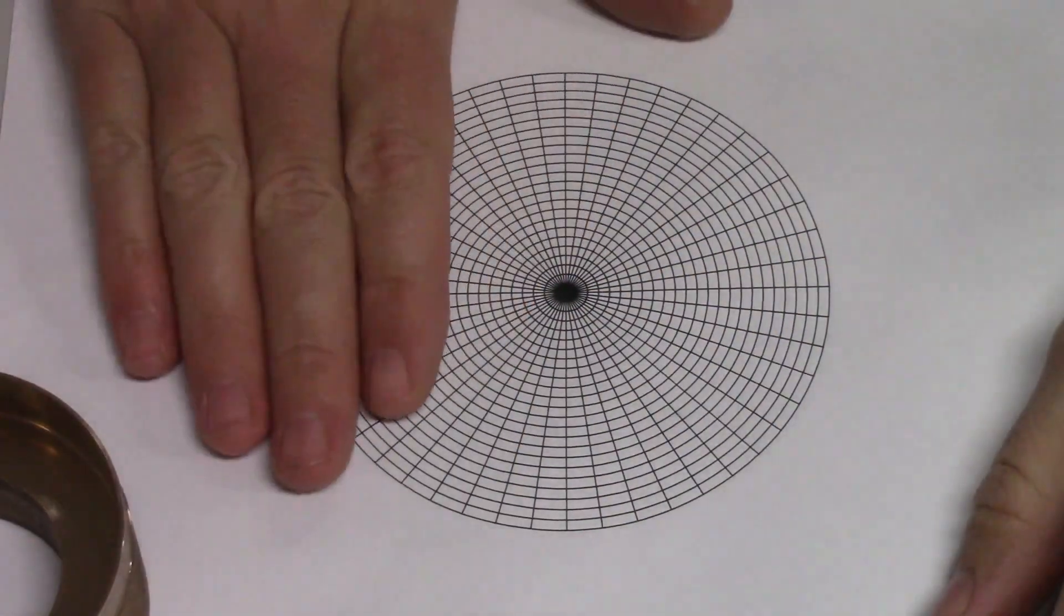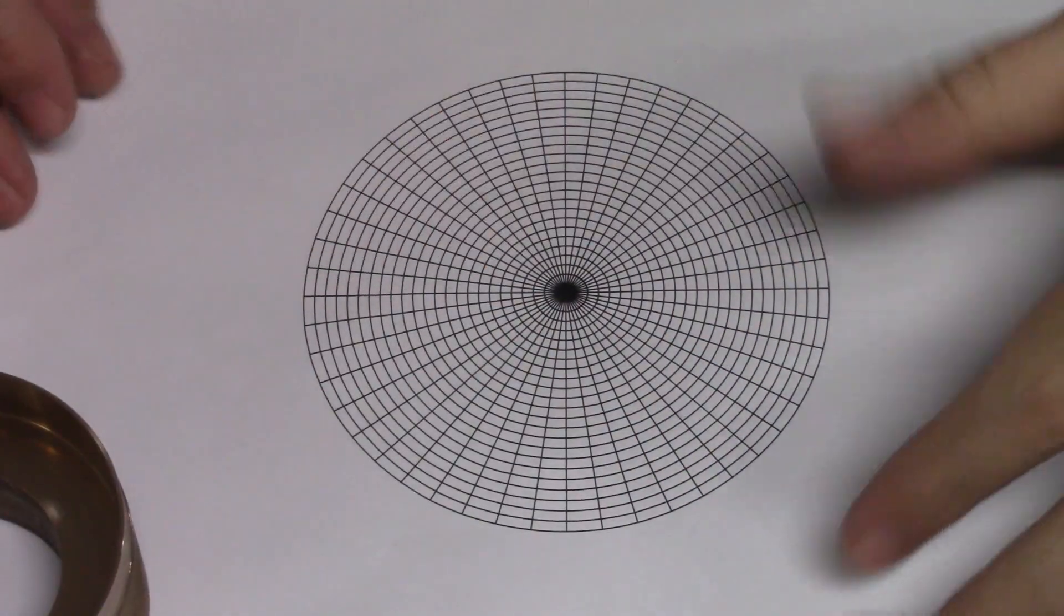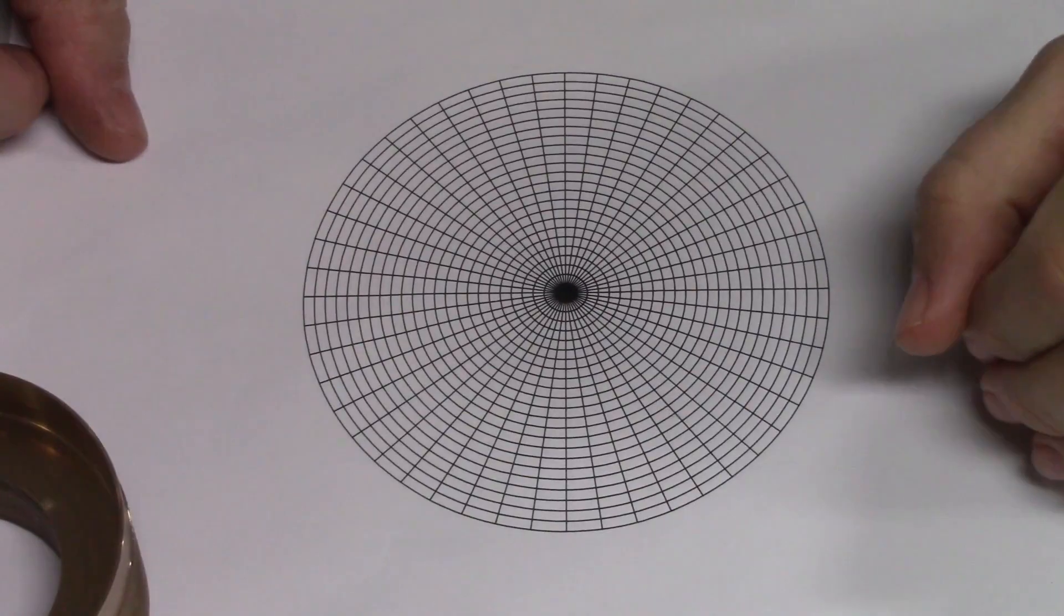To do this, I'm going to use this paper, and on it I've drawn a bunch of concentric circles with lines going across the diameter and copied around to various divisions.